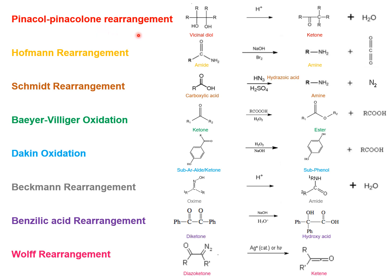In the case of Pinacol-Pinacolone rearrangement, the reactant is a vicinal diol. A diol means a compound containing two hydroxy groups. Vicinal means these two hydroxy groups are attached to adjacent carbons. In this rearrangement, a vicinal diol reacts with any strong acid to form a ketone. One hydroxy group gets protonated and removed as water, while the other hydroxy group loses a proton to get converted into a ketone, and rearrangement involves migration of an R group.